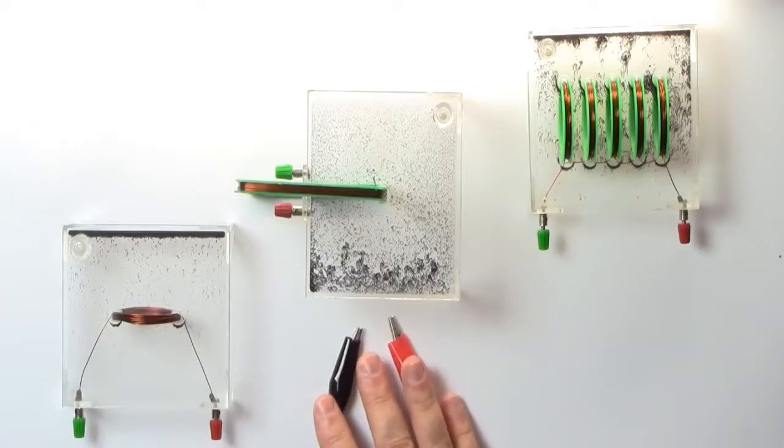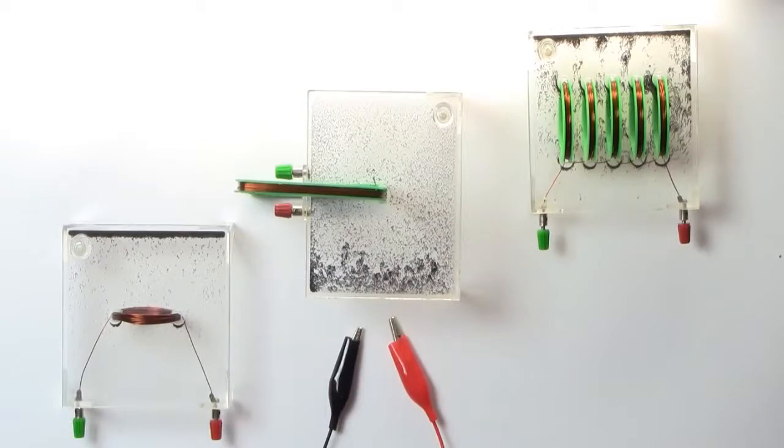Approximately two volts and a current of about five amps will flow. The iron powder will align itself with the magnetic field lines, allowing us to visualize the otherwise invisible magnetic field.